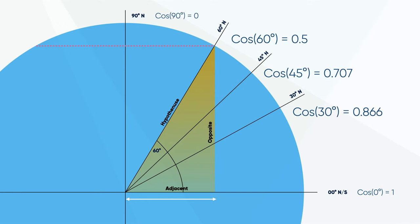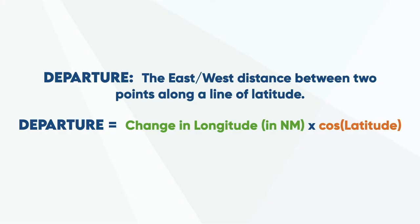So now you can work out the departure between any two points on the Earth. The departure formula is: change in longitude (in degrees), multiplied by 60 nautical miles per degree, multiplied by the cosine of your latitude.